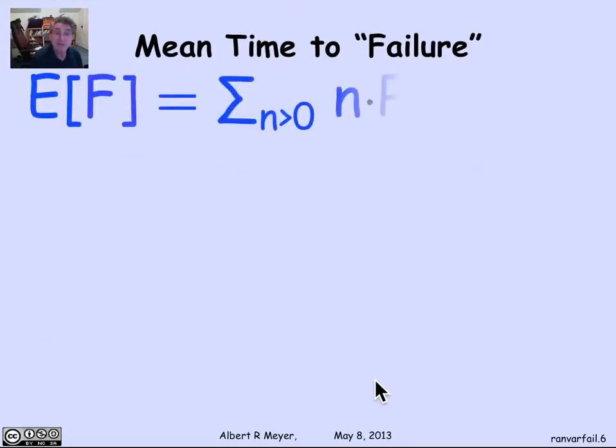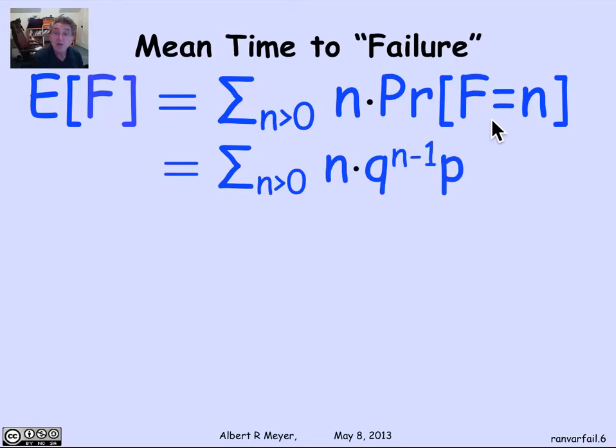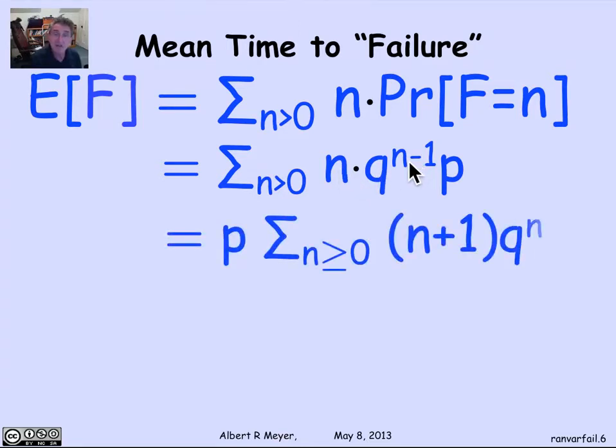All right, so what's the formula for the expectation of F? It's simply, by definition, the sum over all the possible values of F, which in this case are integers N greater than 0, of N times the probability that F equals N. We figured out that the probability that F equals N is Q to the N minus 1 times P. And now I'm going to observe that we really do know how to evaluate this sum easily enough. I'm going to factor out the P, and it becomes a sum over N greater than 0 of Q to the N minus 1 times N. And then I can simplify matters if I replace N by N minus 1, and then I get a Q to the N power. So this is equivalent to P times the sum over N greater than or equal to 0 of N plus 1 Q to the N.